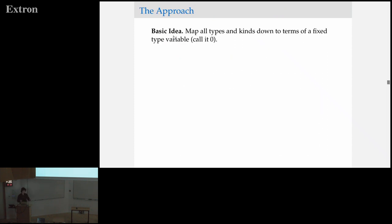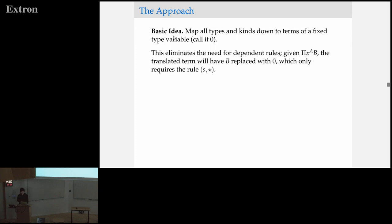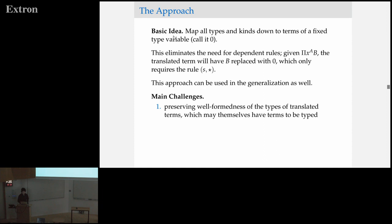We can view both of these translations as eliminating the dependent rule in the system. The rule that is the right-facing arrow in this picture is the one that allows us to have dependent types. The translation is basically translating down into the system that does not contain that rule. The basic way we're going to be able to do this is to map all of our types and kinds down to some fixed type variable — I'll just call it zero. Once we do this, it eliminates the need for any dependent rules, because if we have some product pi x A B and we've replaced B with zero, the only rules we ever need are (s, star).